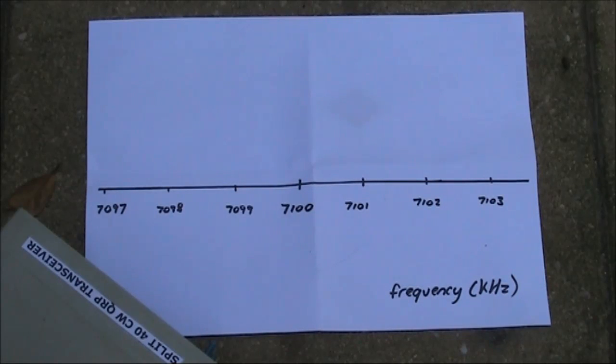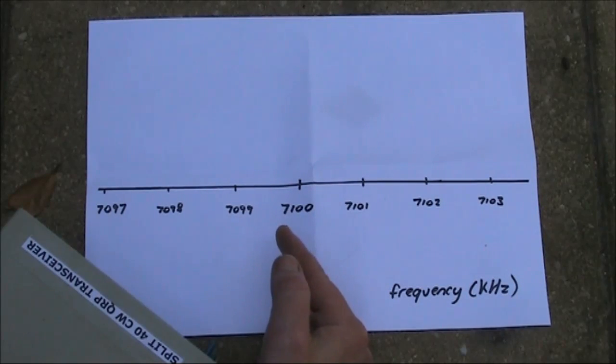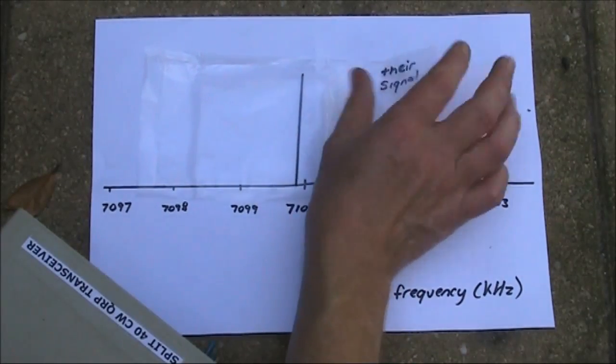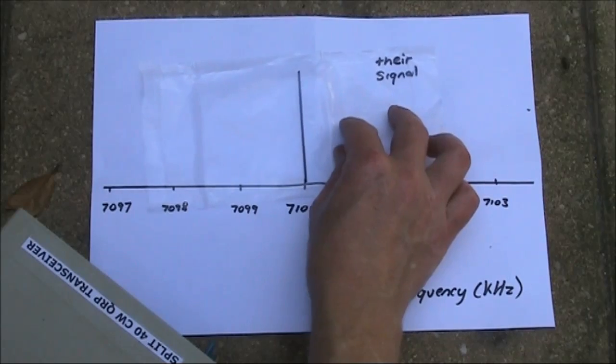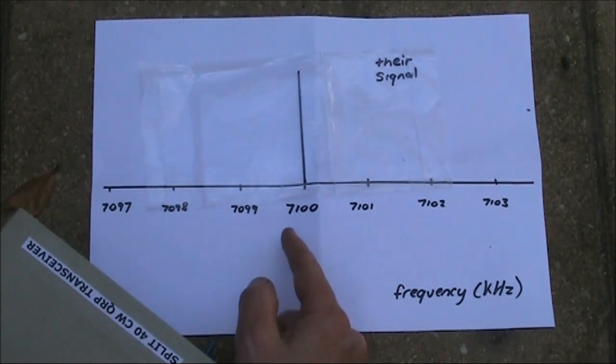Here's a simulation of a spectrum display. This is 7.1 MHz, this is 1 kHz above that, and this is 1 kHz below it. At the moment, the band is dead, there's no signals. But let's suppose that a station comes up. They might be tuning up and then eventually put out a CQ call on CW exactly on 7.1 MHz.